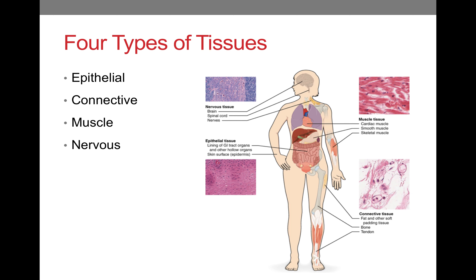There are four types of tissues: epithelial tissue, connective tissue, muscle tissue, and nervous tissue. There are many different types of each of these kinds of tissues, and they all four have different functions, so those will be separate screencasts.